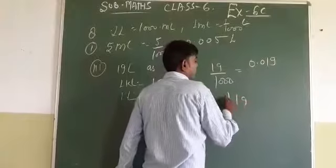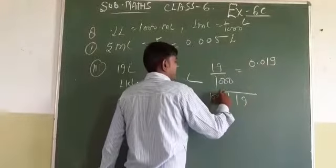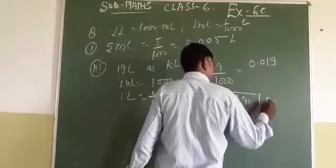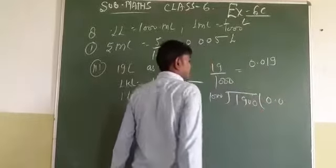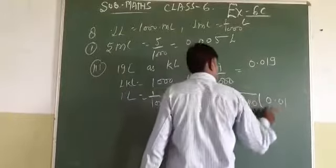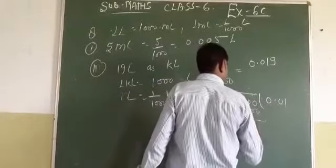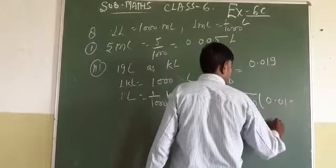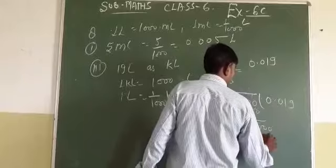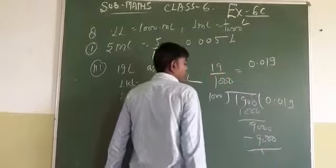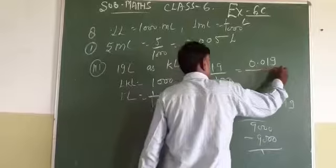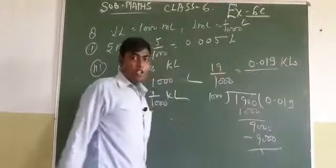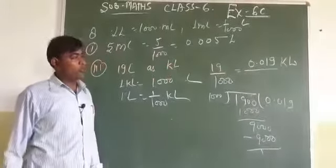Dividing 19 by 1000: move the decimal 1 place, make zeros. 1 times 1000 is 1000, 9 remains, 900 total, 9 times gives 9000. So the answer is 0.019 kilolitre. It's okay. Thank you, take care, goodbye, good day.